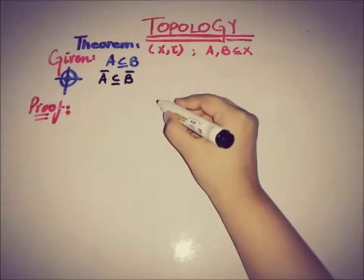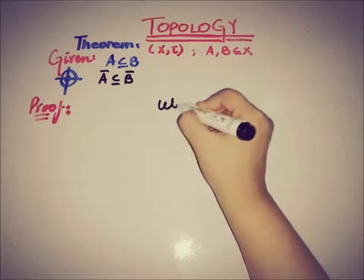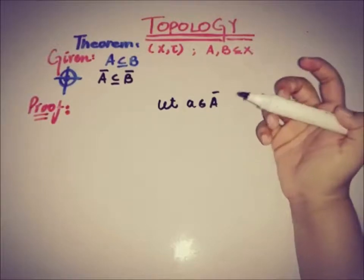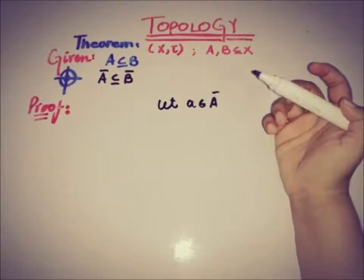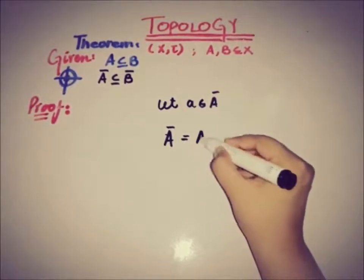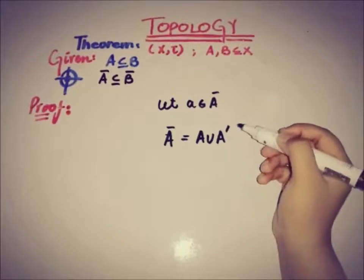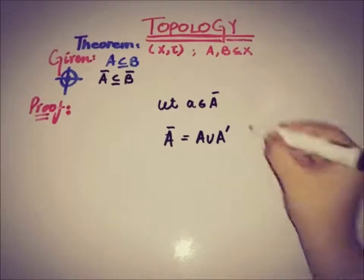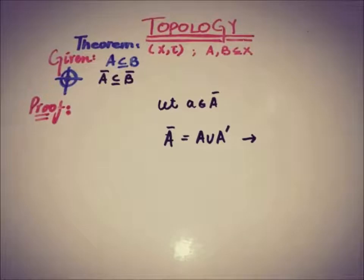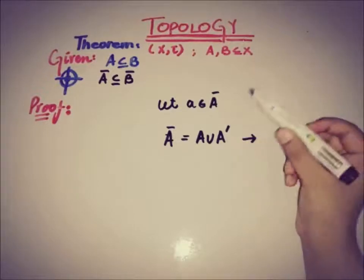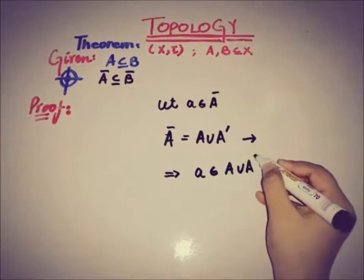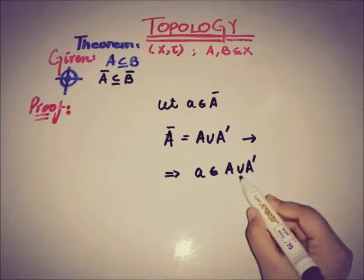Let a be an element of Ā. We know the relation that Ā equals A union A', where A' is the set of accumulation (limit) points of A — this theorem was proved in the previous video. So if a ∈ Ā, then a ∈ A ∪ A', giving us two cases.